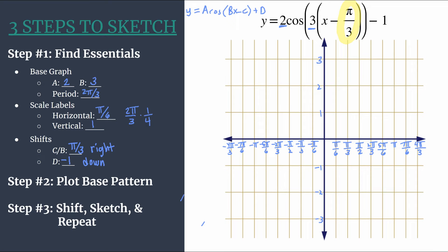Remember, we want to do this lightly or in a different color ink, because this is not our final graph. We'll tackle the shifts in step three. But this is just our base pattern. Really, this will be if we were graphing the simpler equation two cosine three X is what we're doing here. So we're doing pre-shift work.